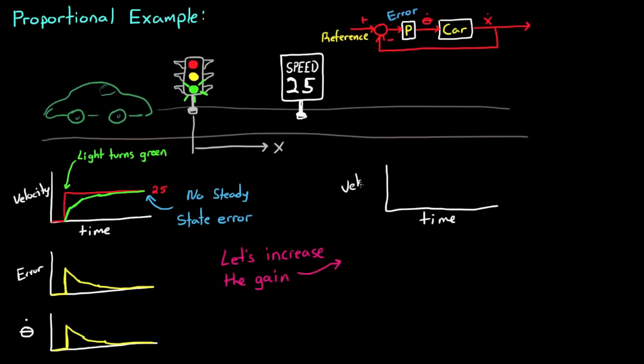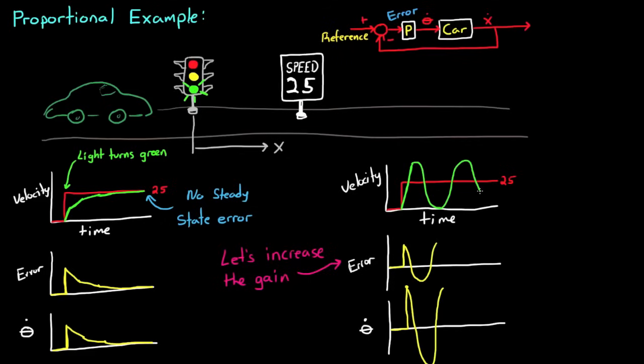Now initially the vehicle is at rest, and then the light turns green and there's a step up to 25 miles per hour. Same as before. And this is a large error. And instead of pressing on the gas pedal slightly, you floor it because of the high gain. And before you have time to register that you've pressed the gas pedal too far, your car is all the way up to 50 miles per hour. Now at this point, the error is now minus 25 miles per hour. So you slam on the brakes, and again before you have time to realize your speed, the car is stopped. And then the cycle starts all over again.